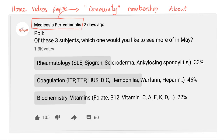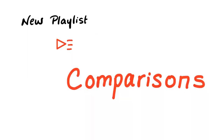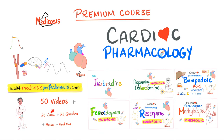I have a survey — I'd like to know your opinion. Click on Medicosis Perfectionals, then find the community tab and you'll find the survey. Choose out of three subjects which one you'd like to see more in the month of May. Also, until the end of the month, my cardiac pharmacology course and my antibiotics course are on sale. The price will go up next month, so please go to MedicosisPerfectionals.com.